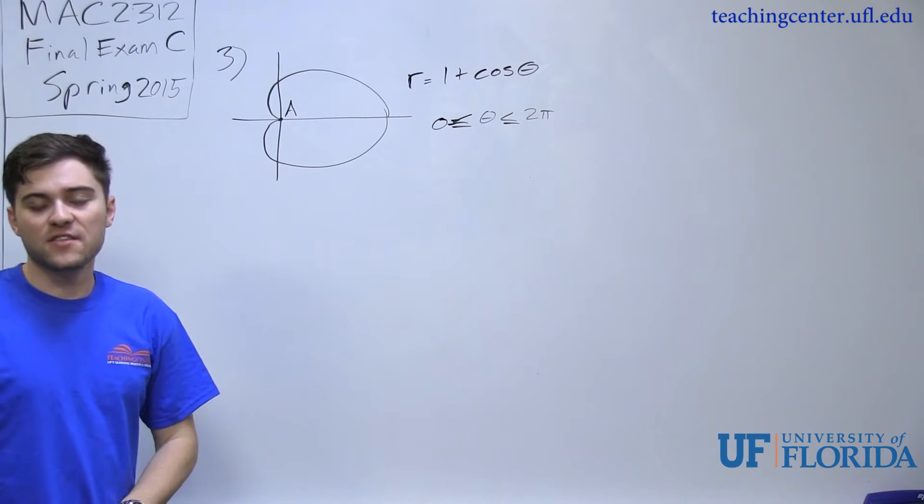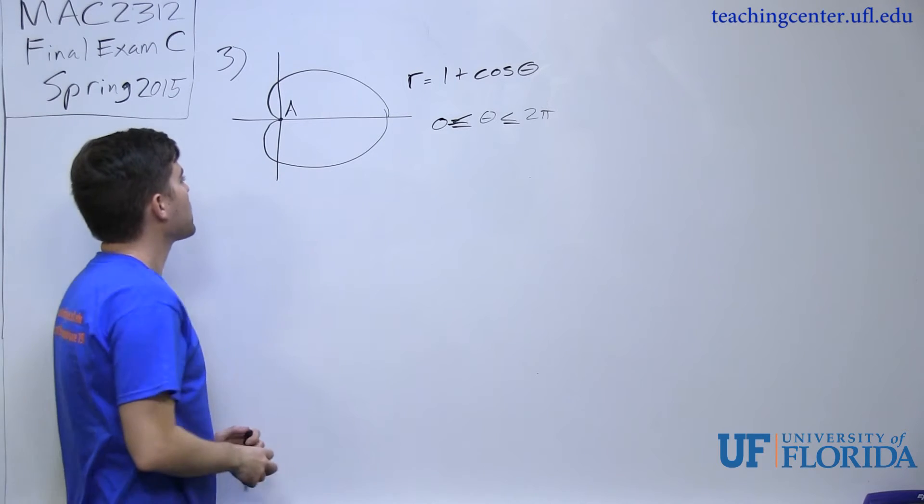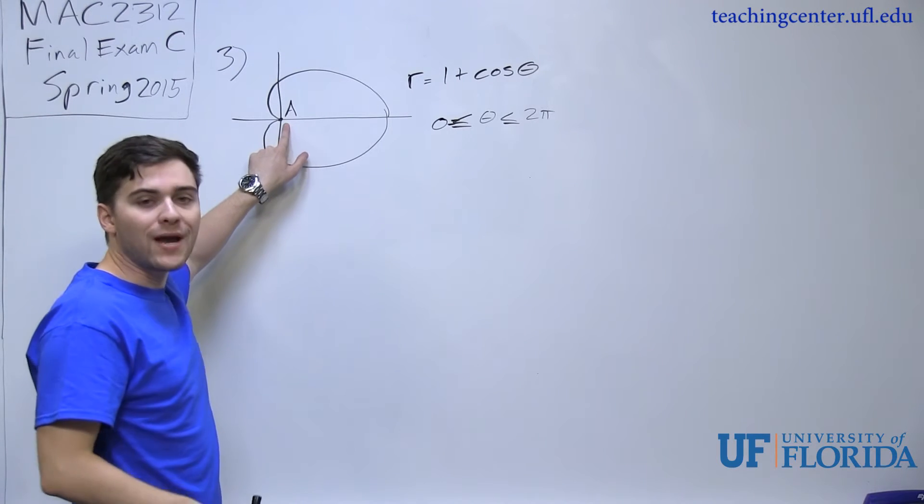So it gives us an equation that says this is equal to r equals 1 plus cosine of theta, and to figure out what A is, I just need to figure out what my radius is at that point.